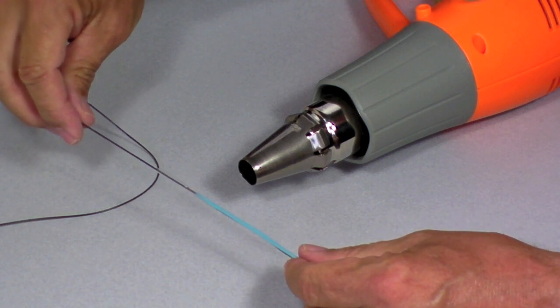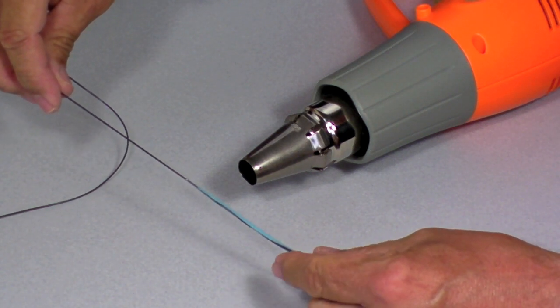So now I'll just wait for this to cool, and I will then peel off the heat shrink, and then I'll show you the final result.